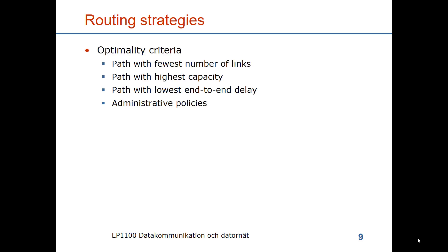There are various strategies to routing. We need to define the optimality criteria. We could say that we want the path with the fewest number of links or the fewest number of switches. Or we would like to use paths which have the highest capacity. Or paths with the lowest end-to-end delay, which could be the propagation time, meaning you should choose the shortest geographical distances for the routes. But there could also be administrative policies affecting the choice of routes, for instance to bypass certain countries which are deemed to be security risks.